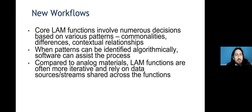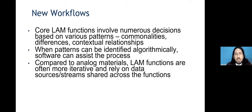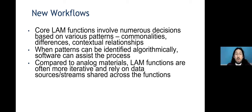Bringing this to the shifts in libraries, archives, and museums: core LAM functions involve numerous decisions based on patterns — commonalities, differences, and contextual relationships. When those patterns can be identified algorithmically, software can really assist in the process. I always use the term 'computer-assisted' rather than 'automated,' because there are very few core LAM functions that can be truly automated in any meaningful way.